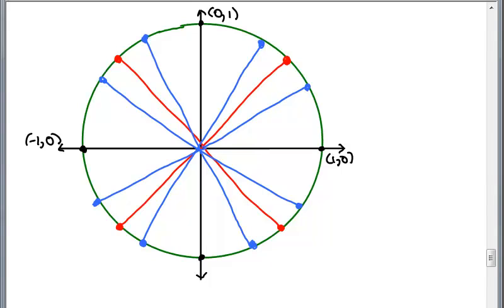All right. So first of all, notice I have a unit circle. So I have the ordered pair 1, 0, 0, 1, negative 1, 0. And this one at the bottom, that will be 0, negative 1.